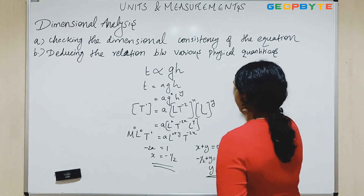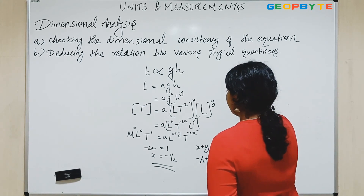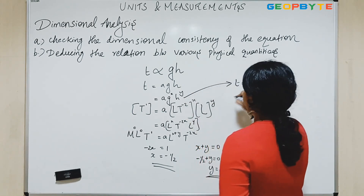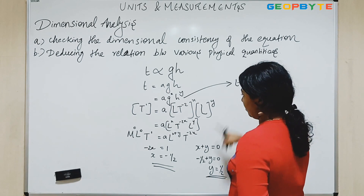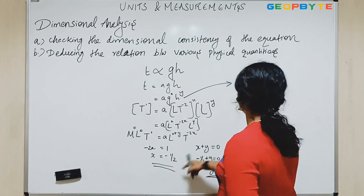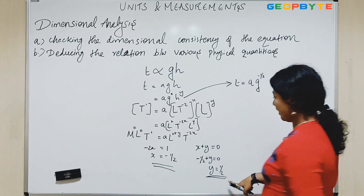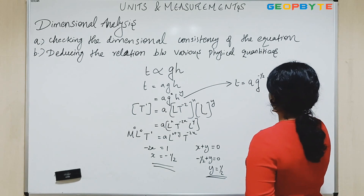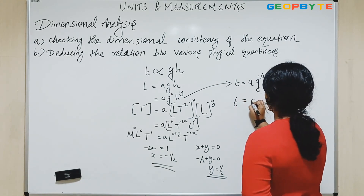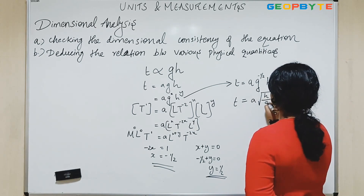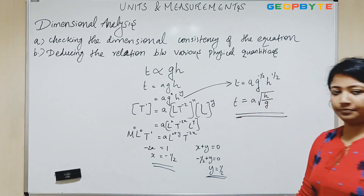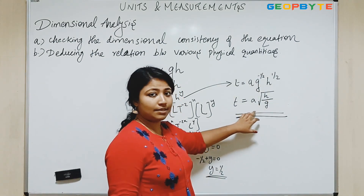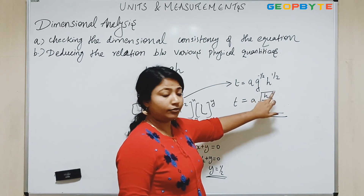So I can write this equation as: T equals A times G to the power minus 1 by 2, times H to the power 1 by 2. That is T equals A times root of H by G. So I understood that time T depends upon the square root of H by G. There are certain limitations also for this dimensional analysis — for example, if you have an equation like A sine(omega T), in this case you can't do this dimensional analysis. Also, this doesn't give any information about the constants.